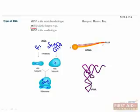Messenger RNA, or mRNA, is the product of transcription of genes. Some genes are really long, so mRNA is the longest type of RNA.